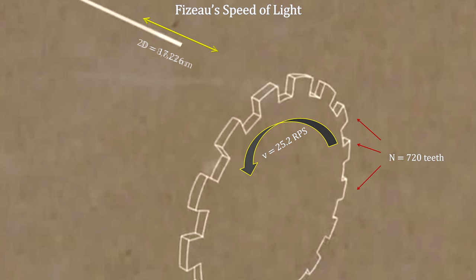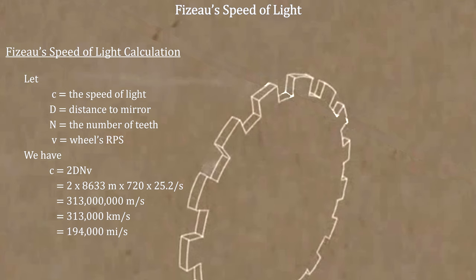Dividing the distance by the time gave him the speed of light at 313 million meters per second. He was only off by 4%.